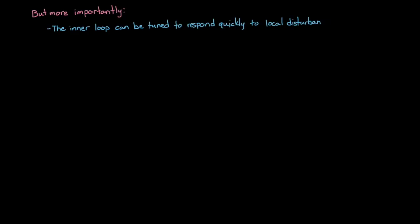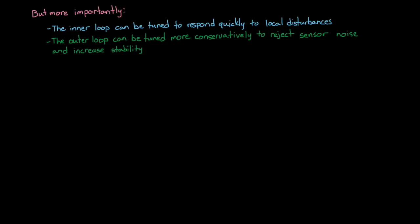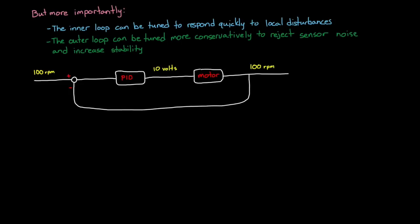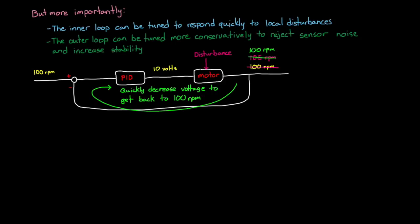But a more important reason to have cascaded loops is to run them at different speeds to address different problems and sources of error. The motor controller can respond quickly to local disturbances, whereas the altitude controller can be tuned conservatively to reject sensor noise and increase stability. For example, in cascade control, let's say the propeller motor takes 10 volts to run at 100 RPM — the speed required to hover the drone. If the battery voltage drops or motor bearing resistance changes, the inner loop motor controller can sense this error and adjust the motor voltage in a fraction of a second so that the propeller speed is barely affected.